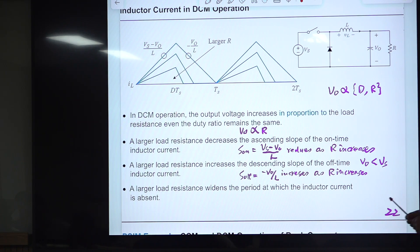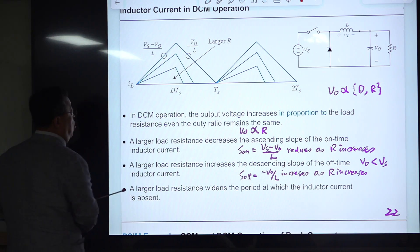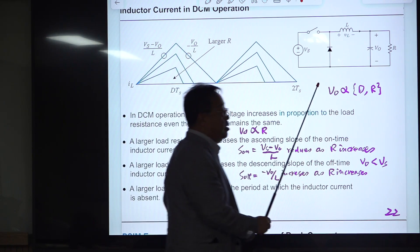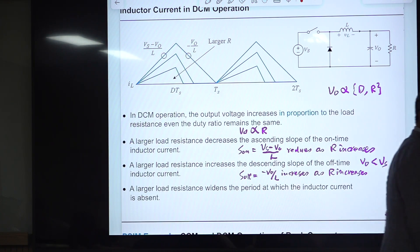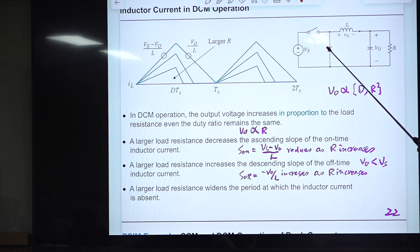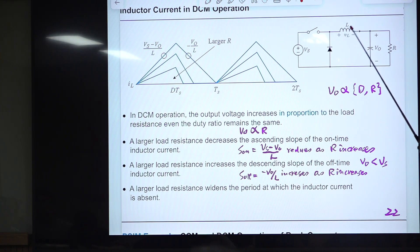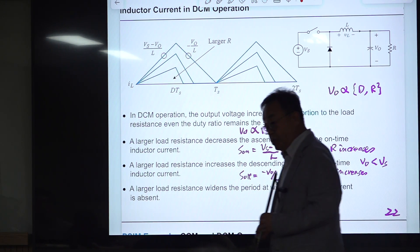This is a waveform of inductor current in DCM operation of this buck converter. The very reason for having this DCM operation is these two diodes — both of them are unidirectional switches. So this direction of current and this direction of current is not allowed, which means the inductor current should always be positive.